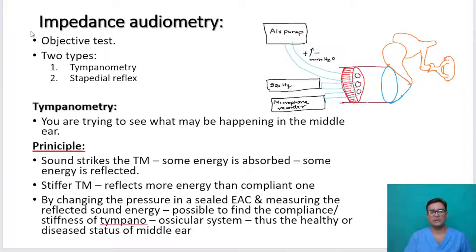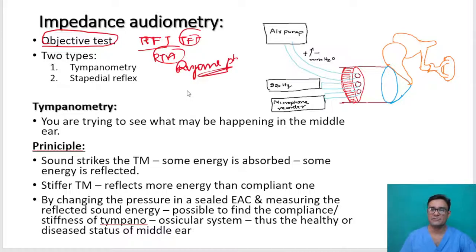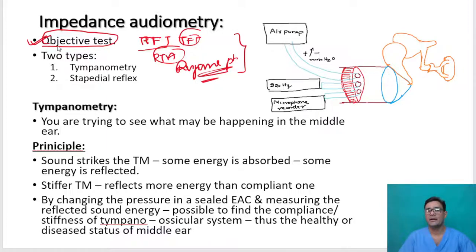Coming to impedance audiometry, the first thing that we have to really impress upon is that it is an objective test. Till now we were talking about Rinne's test, tuning fork test, and pure tone audiometry. Both of these require the response from the patient. But impedance audiometry is an objective test — the response from the patient is not required. We perform the test and we get the results, and we can be fairly confident about the accuracy of the test.